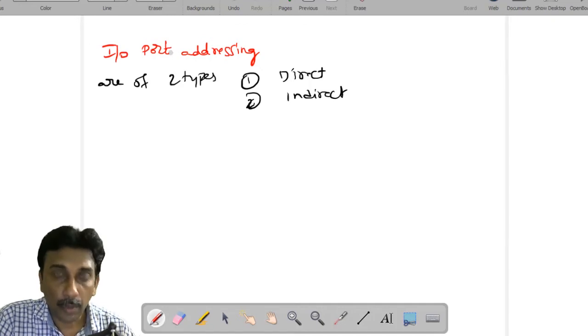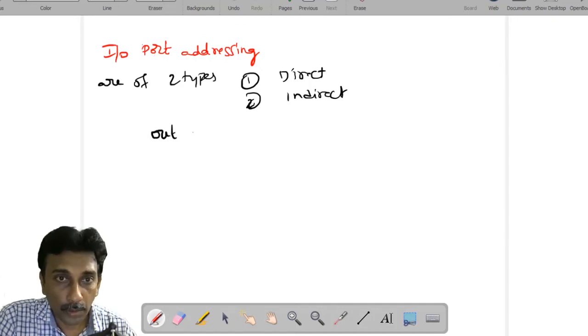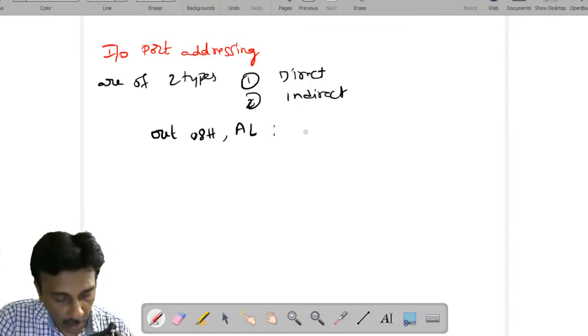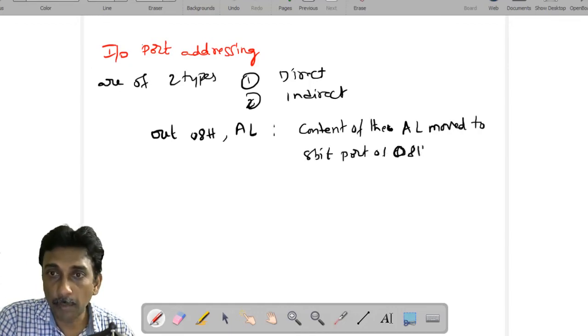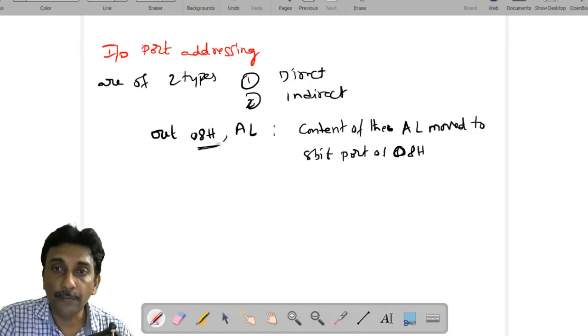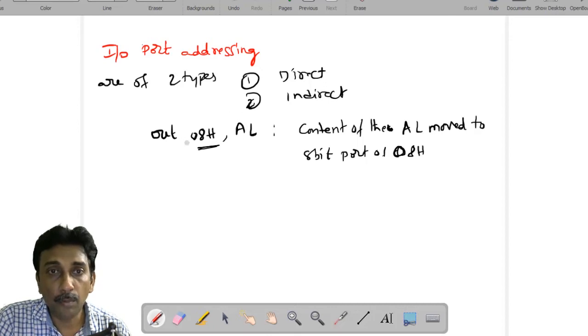Let them take an example for input port and output port. OUT 08H, AL - if you write like this, this is the meaning of the content of the AL moved to 8-bit port of 08H. So the port address is 08H. The port has a specific value of 08H address. Using that address, the AL contents will be moved out.